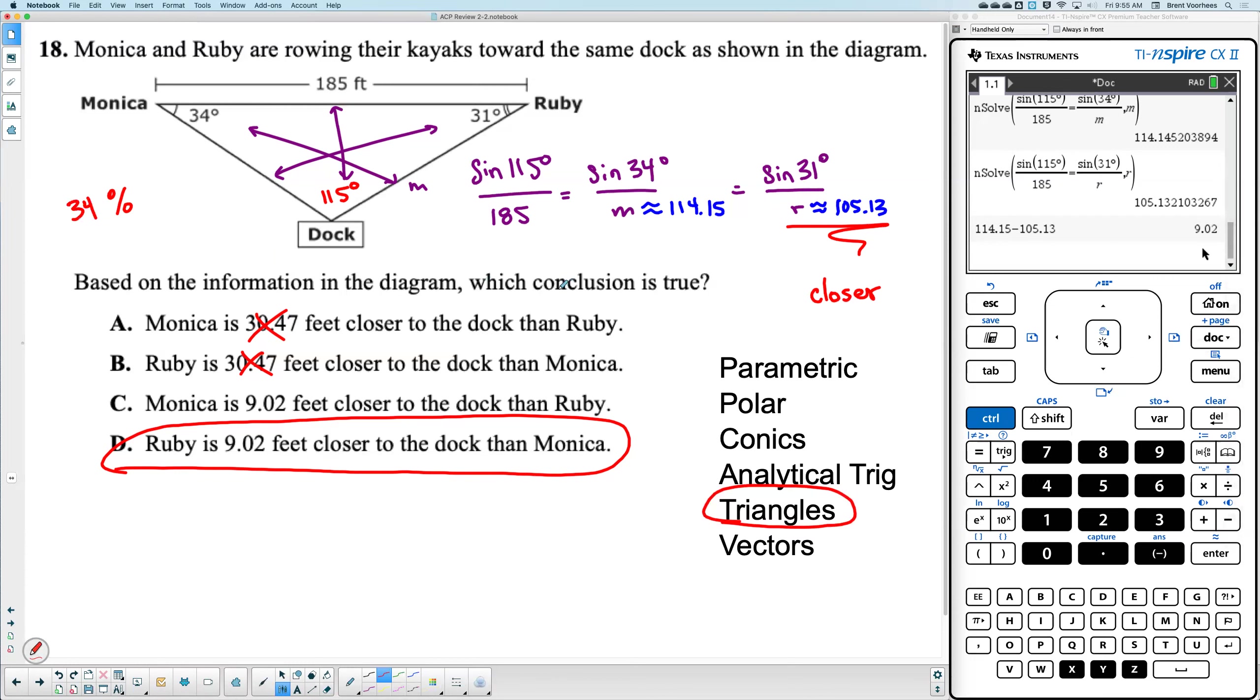Okay. Towards the dock. Based on the information, which conclusion is true? Ruby is closer to the dock than Monica. Ruby is closer to the dock than Monica. This is a shorter distance. This is 105 point. Oh, wait a minute. Wait a minute. Wait a minute. I see why. This is tricky. Yeah, it's 50 still. I should have wrote it in. This is what I get for not writing it in.